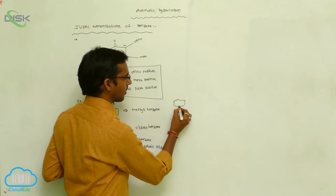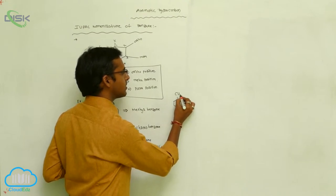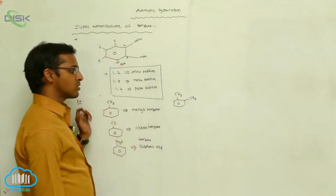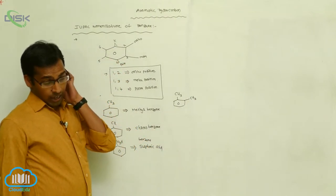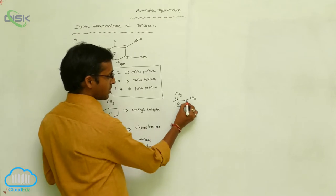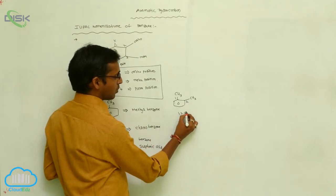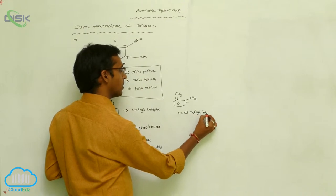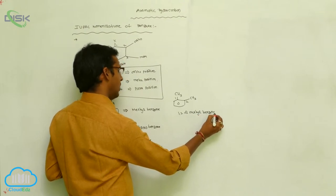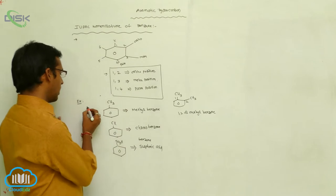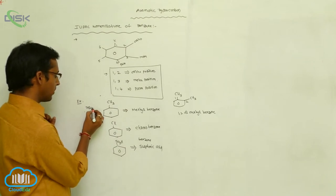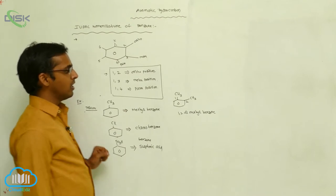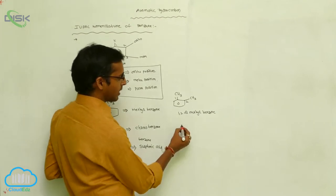For example, if you write a structure where a methyl group is here and also another methyl group here, the first position is 1 and the second position is 2, so the name is 1,2-dimethylbenzene. The common name for methylbenzene is toluene. This structure, 1,2-dimethylbenzene, can also be called ortho-xylene.